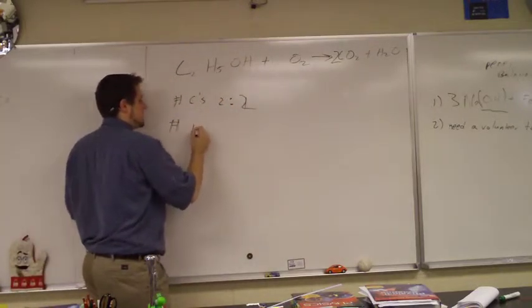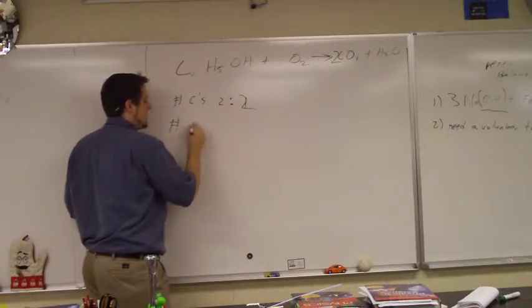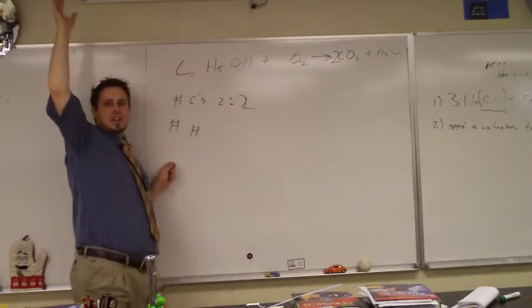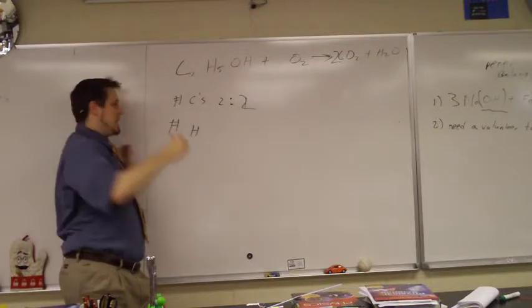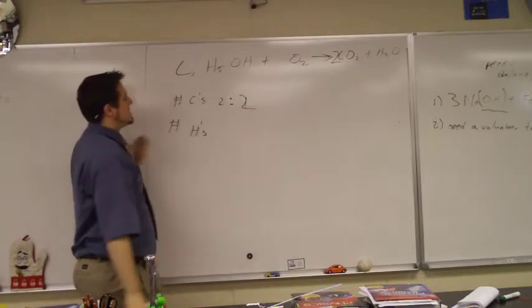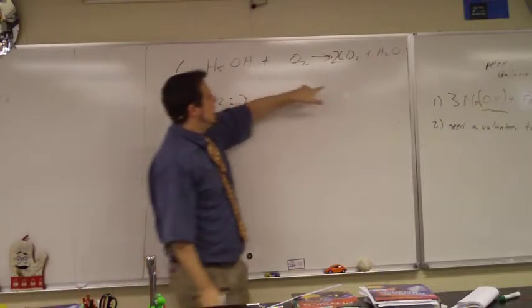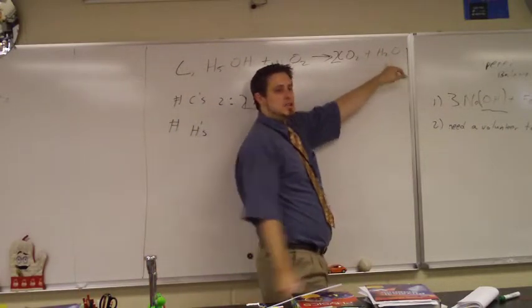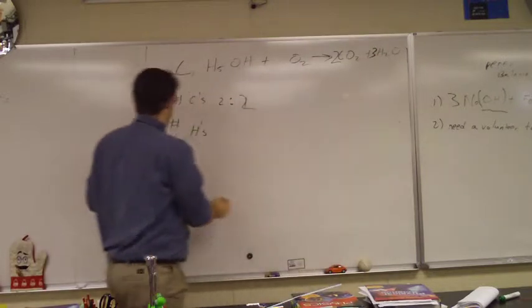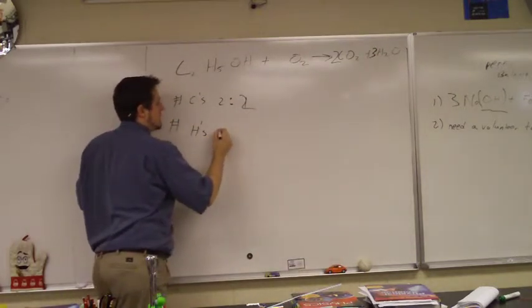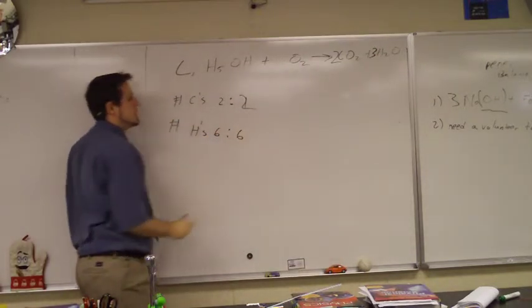Number of, what do you want to do next? Oxygen? Hydrogen. How many people say oxygens? How many people say hydrogens? Hydrogens win. Alright. So how many do we have on the left? Six. How many do we currently have on the right? Two. So I'm going to put a three. Oh, that makes sense. So now we have six and six.